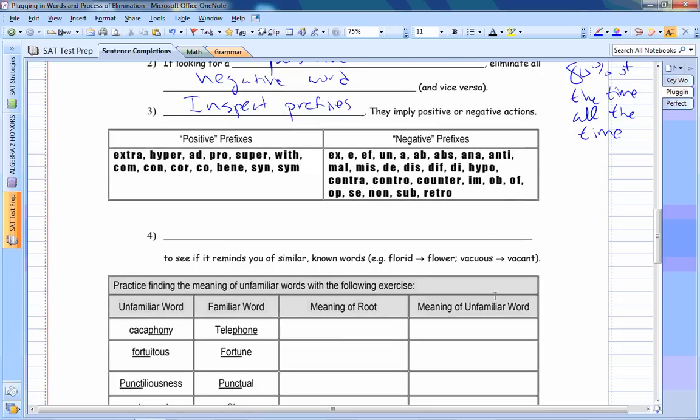And here are some examples of positive and negative prefixes. Like extra, hyper, like if someone's extraordinary, it's more than ordinary. Hypersensitive means very sensitive. Or if you think about like misrepresenting, it means you're not representing. Or disrespect means to not respect someone.